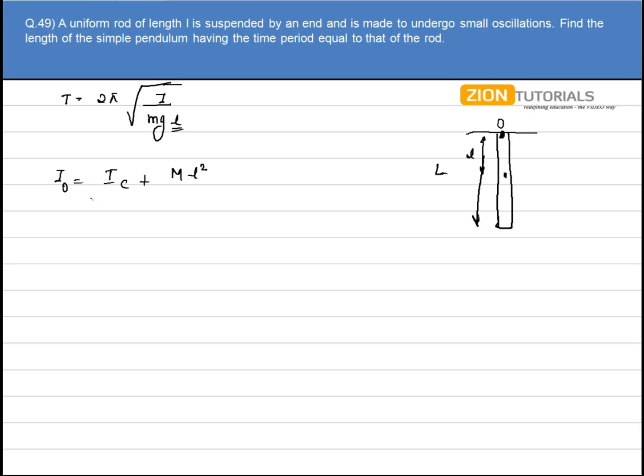So this will be the moment of inertia, and the moment of inertia about the center of mass is given by ML²/12 plus M times L/2 squared. So it will be ML²/4. It comes out to be ML²/3. So I have the moment of inertia now.